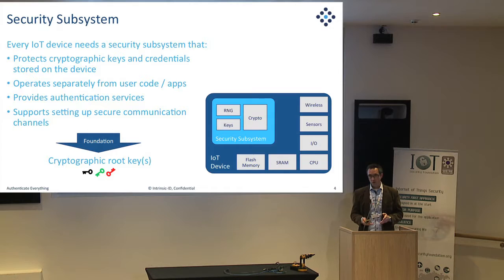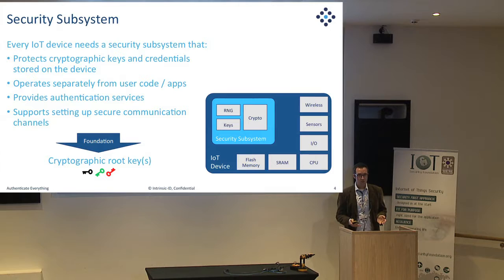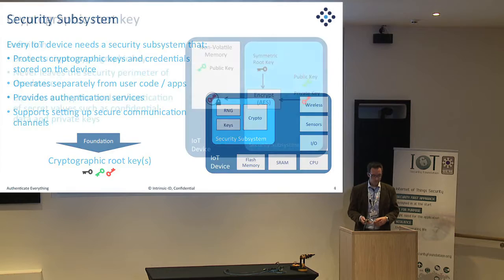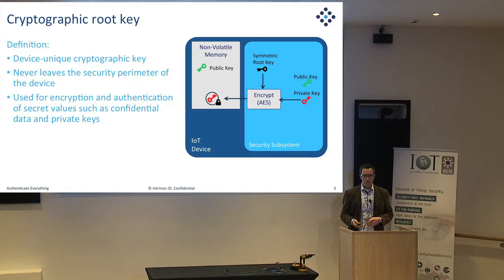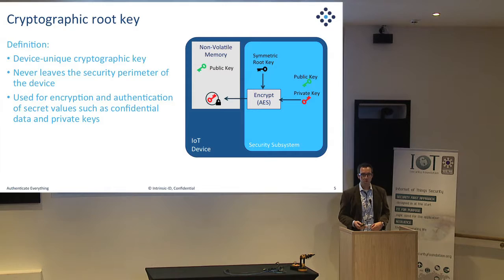The root of such a security subsystem is actually a bunch of cryptographic root keys — that's the real foundation. A cryptographic root key is a device-unique cryptographic key that never leaves the security subsystem, and it can be used to set up authentication as well as to secure other secret data like keys on a device. Even with just one such root key, you can protect multiple keys and start bootstrapping your security system.